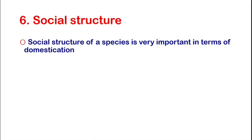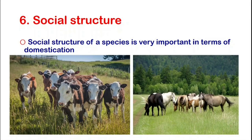Social Structure. The social structure of a species is very important in terms of domestication. Almost all species of domesticated large mammals live in herds, which made it possible to keep them in captivity in small spaces. Similarly, most domesticated species have a well-developed hierarchy, which made it possible for them to recognize humans as their new leader.